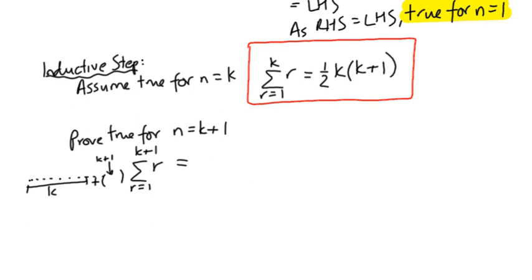In other words, sigma r up to k plus 1 is equal to the sum of the first k terms in the sequence, plus what happens when you put k in here, which in this case is just going to be k plus 1 in here, which is just going to be k plus 1.